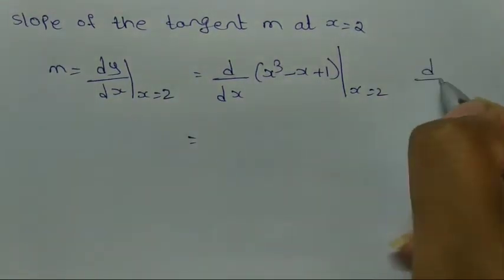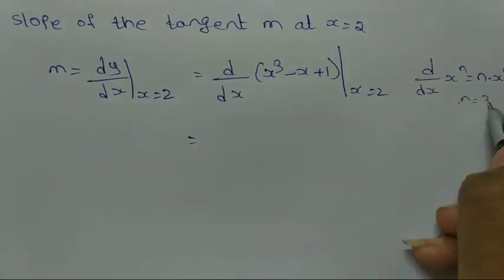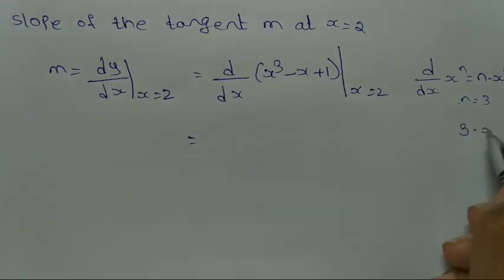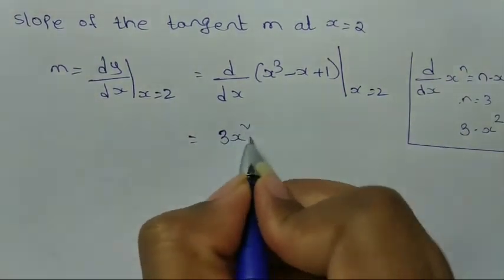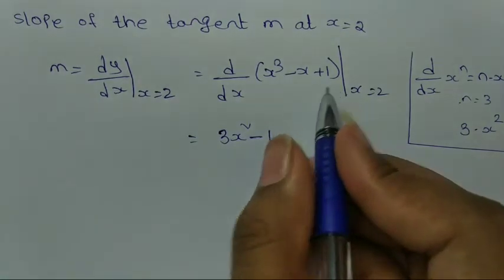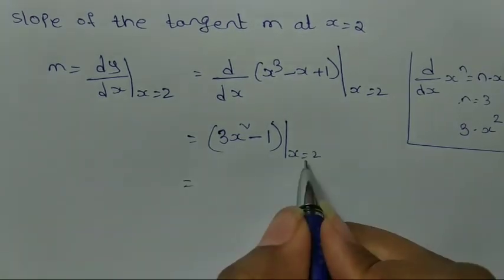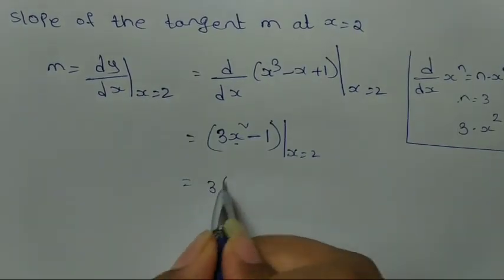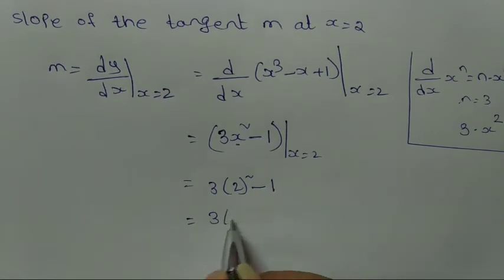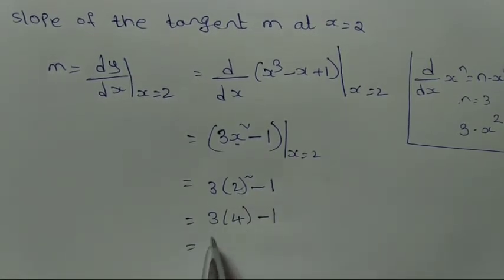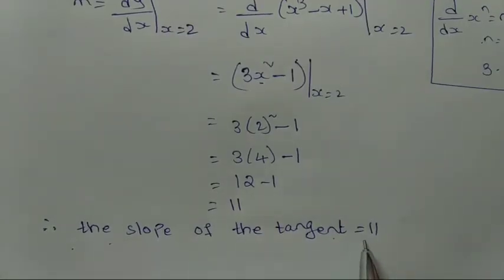Using the power rule: derivative of x³ is 3x², derivative of x is 1, derivative of 1 is 0. So dy/dx = 3x² − 1. At x = 2: 3(2²) − 1 = 3 × 4 − 1 = 12 − 1 = 11. Therefore the slope of the tangent is equal to 11.